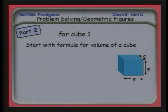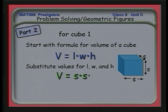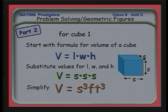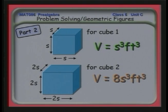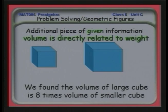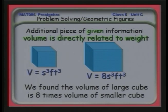For cube 1, we use the same formula and substitute in the length of the sides. When we simplify, we find the volume is s³ cubic feet. Reviewing: cube 1 has a volume of s³ cubic feet; cube 2 has a volume of 8s³ cubic feet. If you double the sides of a cube, the volume becomes 8 times greater — going from s to 2s, we've increased the volume 8 times.